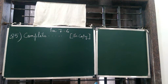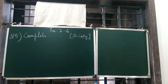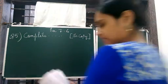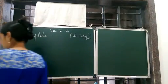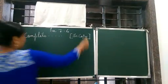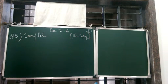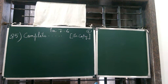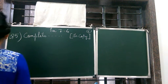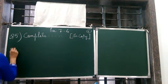Good morning children. Today we are starting with exercise 7.6, question number 5. Yesterday we completed question number 4. So the question says complete the addition-subtraction box, children. This we are also going to do in the copy. Let me make the box for you.